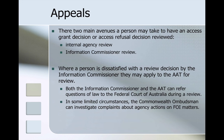If you are ultimately unhappy with the decision, there are two main avenues to have an access grant or access refusal decision reviewed: internal agency review and review by the Information Commissioner. Where a person is dissatisfied with that review, they can apply to the Administrative Appeals Tribunal, and in some limited circumstances go on to the Federal Court of Australia or the Commonwealth Ombudsman.